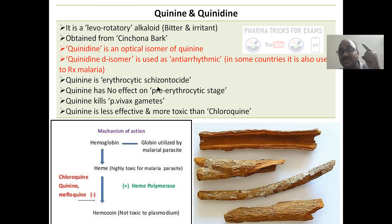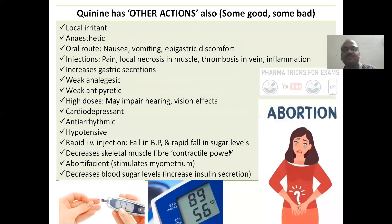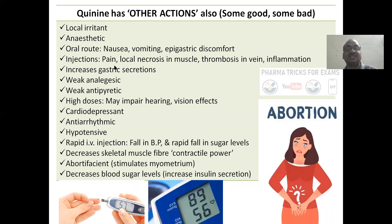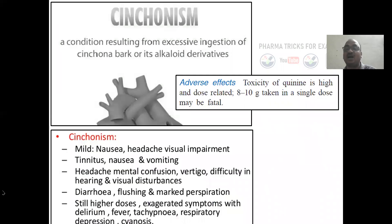Quinine is an erythrocytic schizontocide. Most drugs are erythrocytic except primaquine. Quinine has no effect on the pre-erythrocytic stage. It kills Plasmodium vivax. It is less effective and more toxic than chloroquine. Other actions: quinine causes abortion, it is friendly for BP patients and sugar patients. Rapid IV injection causes a rapid fall in BP, rapid fall in sugar level, and decreases skeletal muscle contractile power — this has appeared in many exam papers. It is also a weak analgesic.